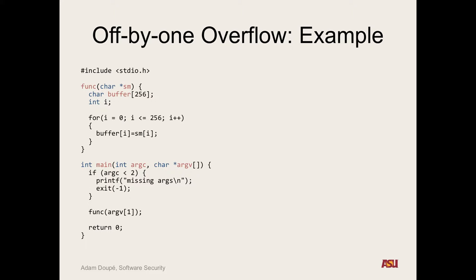The vulnerability is the 'less than or equal to' in that loop iterator. The difference between less than and less than or equal to is very slight, and the number 257 doesn't appear anywhere. We have to know that based on loop semantics and experience. So the question is: can we exploit this example, and if so, how?